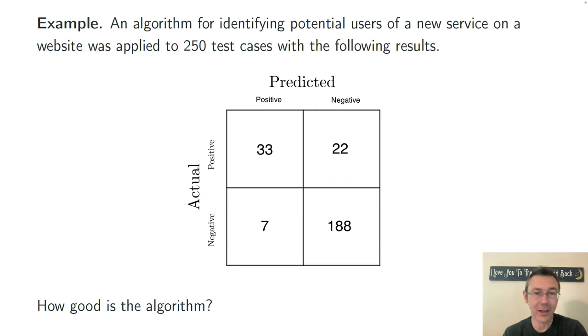I'm going to approach this topic through an example where I'm imagining an algorithm that's supposed to identify potential users of a new service on a website. Maybe I'm adding a new button to my e-commerce site, trying to guess if customers are going to actually use that new button or not. For every case in a sample, I have two possible outcomes.